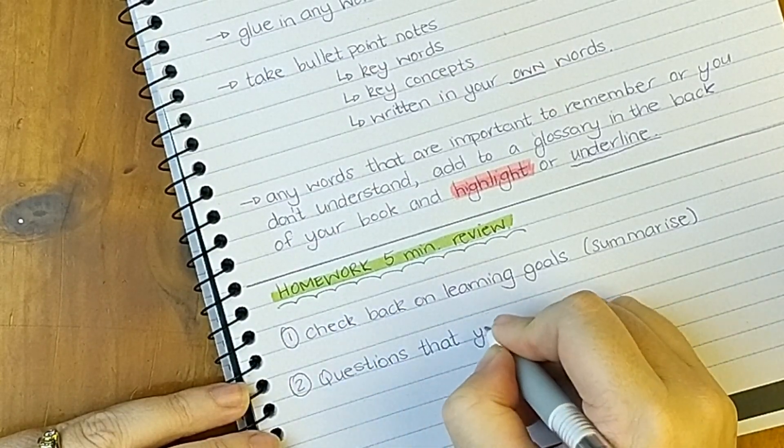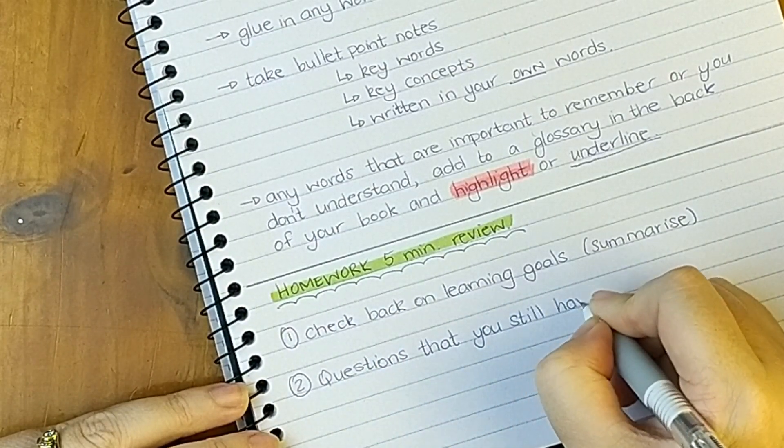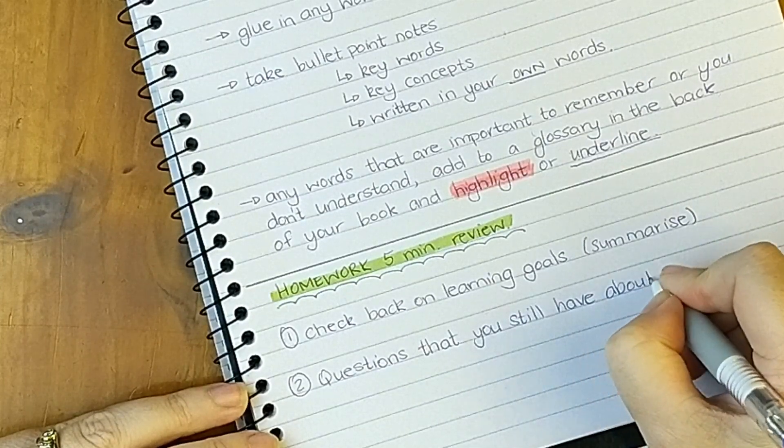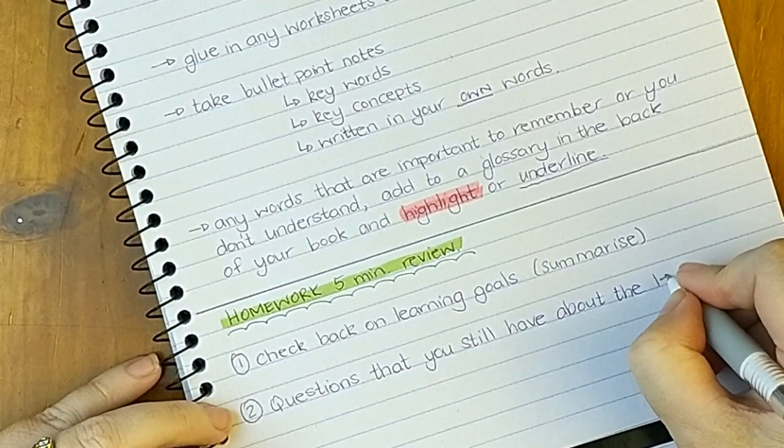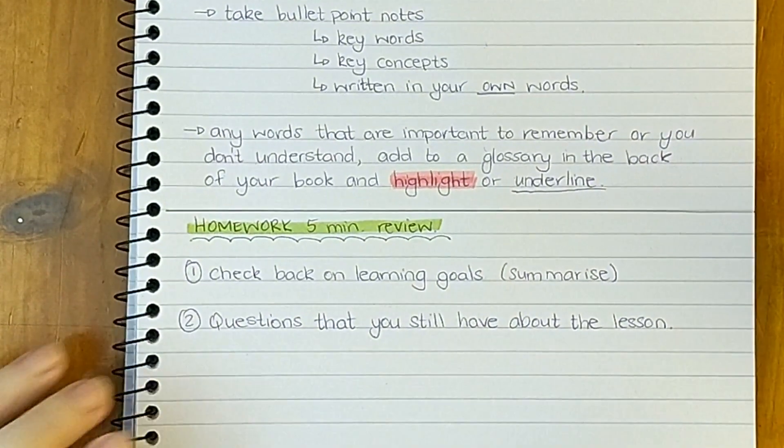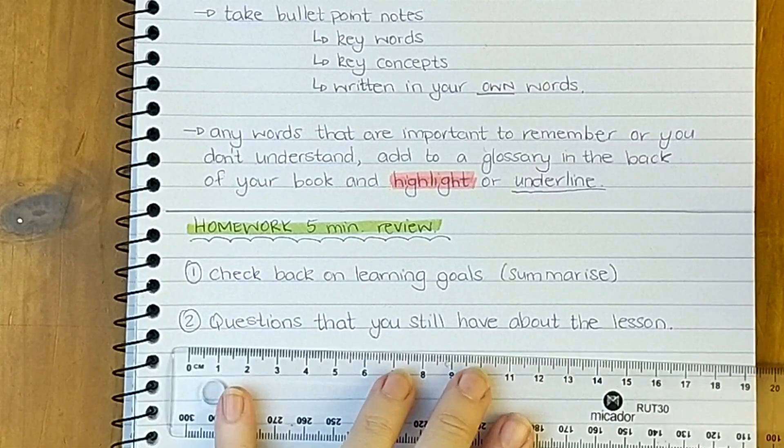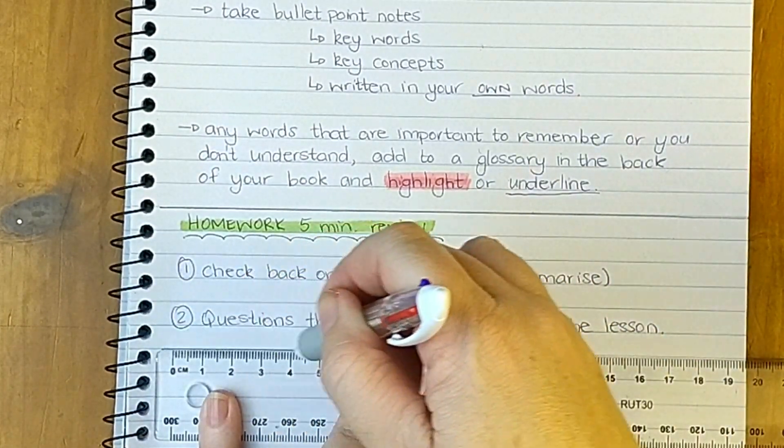The second thing you're going to want to do in your five-minute review is write down any questions that you still have about the lesson that you can ask your teacher about later or that you can research for yourself. Once you're done, rule off again ready for the next day.